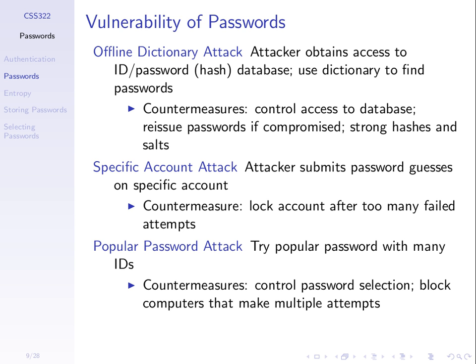How do you stop an offline dictionary attack? Control access to the database — set up your system so a malicious user cannot access the list of hash values. Reissue passwords if they're compromised: if the database is accessed, immediately cancel all passwords and require users to set up new ones through other means. And store passwords using good hashing algorithms and salts as random values to make it harder against rainbow attacks.